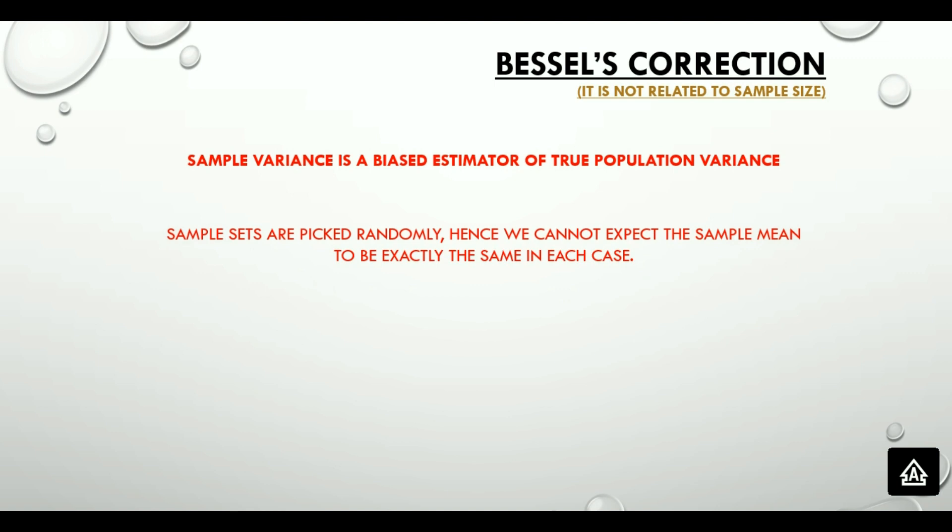It may be impractical to calculate the population variance directly. Number one, because the population size is very large. And number two, due to the data of the entire population being unavailable. So, we always get to work on a smaller subset of the population only, which is a sample.